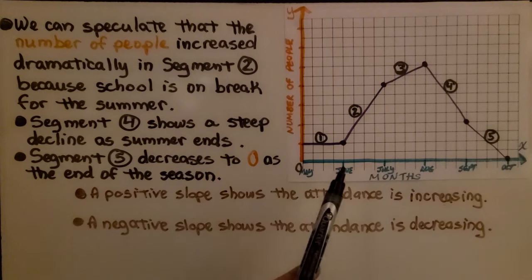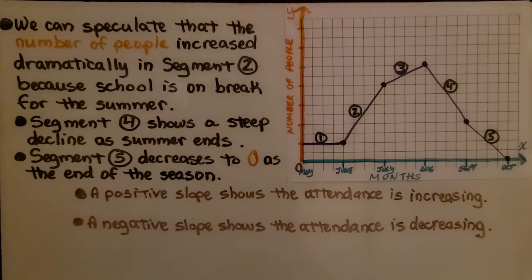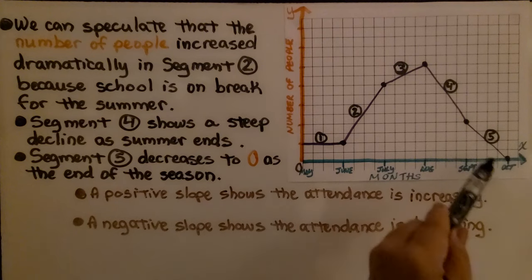A positive slope shows the attendance is increasing, and a negative slope shows the attendance is decreasing.